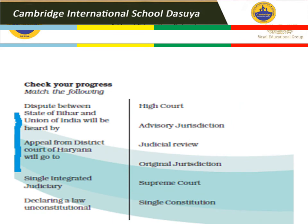Now we will check the answers from the homework given in the last video. Disputes between the state of Bihar and the Union of India will be heard in the Supreme Court. An appeal from the district court of Haryana will go to the High Court. A single integrated judiciary with a single constitution. Declaring a law unconstitutional is called judicial review.